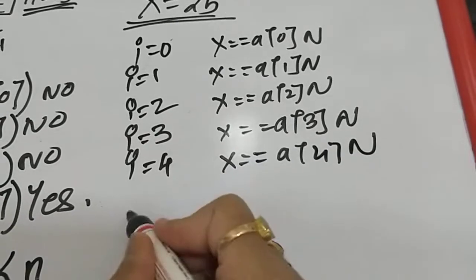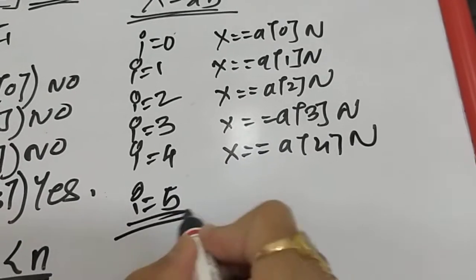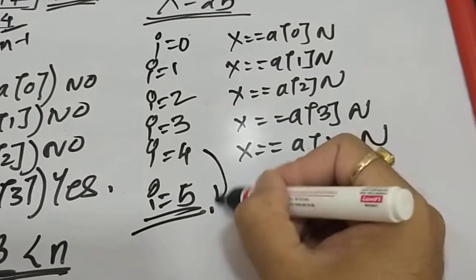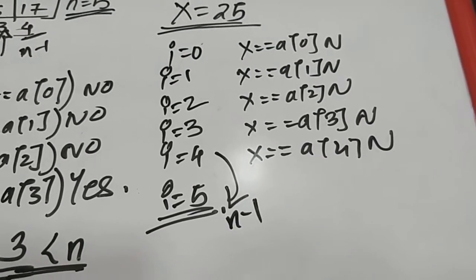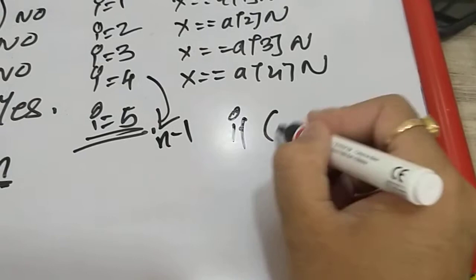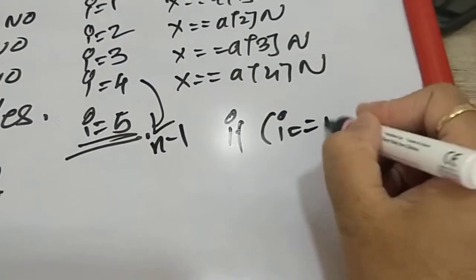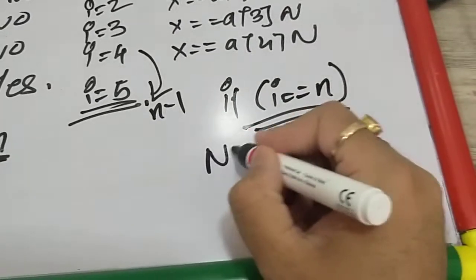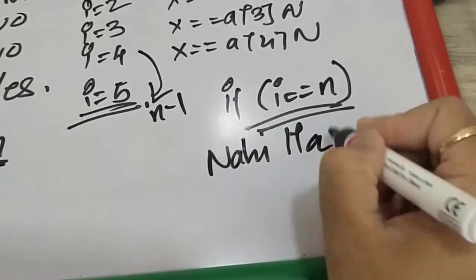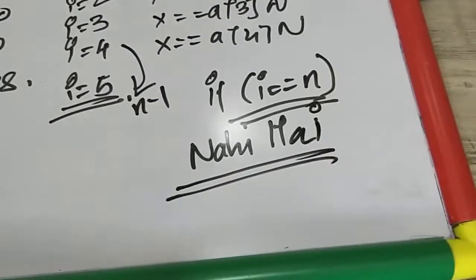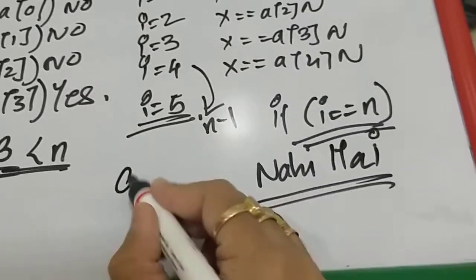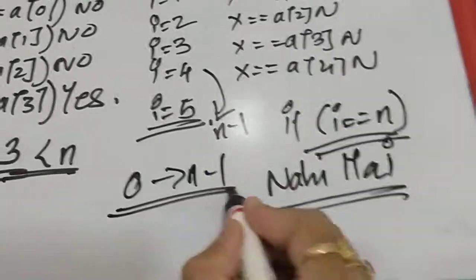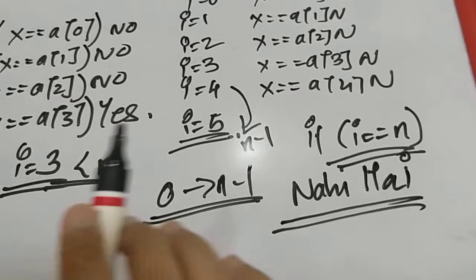i becomes 5. Just concentrate on the value of i. The value of i becomes greater than n minus 1. This means if the value of i eventually becomes equal to n, then the element is not there, because elements can only be from position 0 to n minus 1.